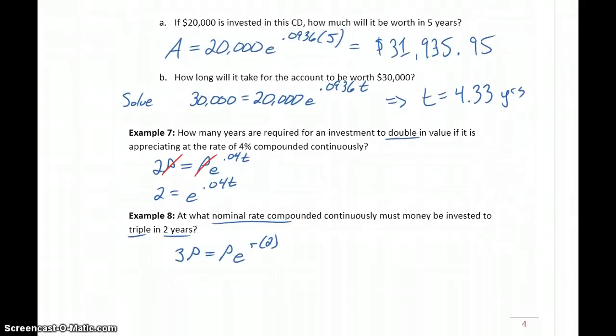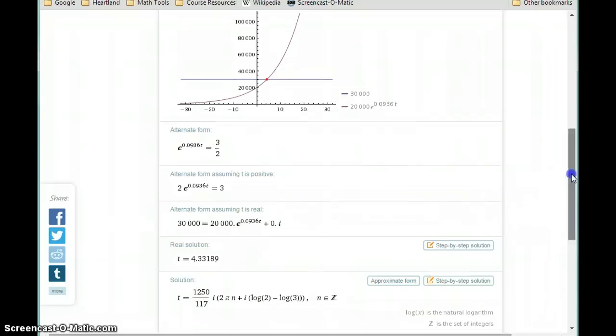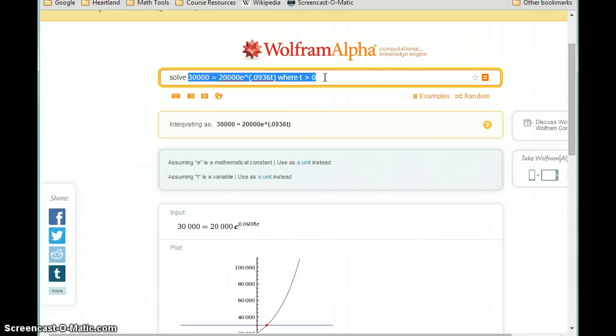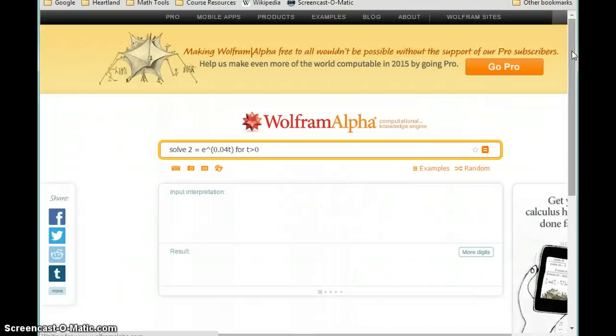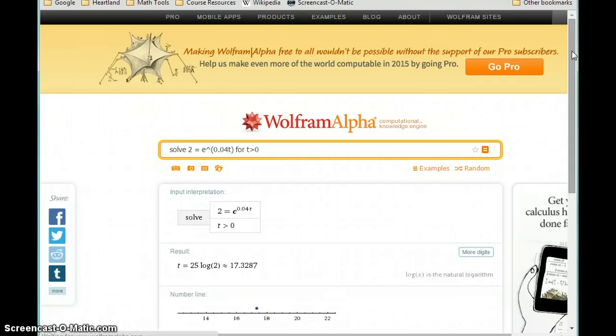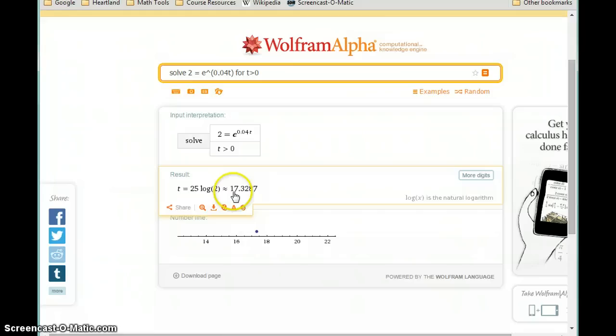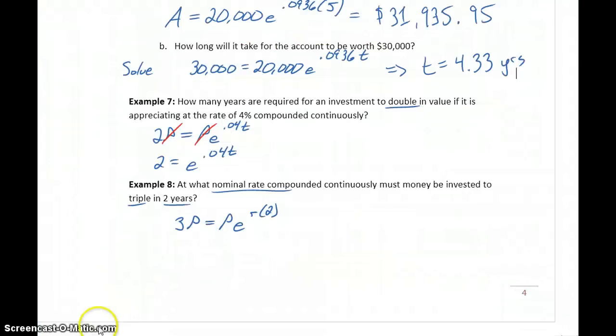So in example 7 and 8, we'll do something similar. For example 7, we can either start with the original expression or we can start with that simplified expression where we cancel the p's. So we're going to solve this equation with, again, this domain restriction that t needs to be greater than 0, since we're not going to consider negative time. And in this case, we get a result of 17.33 if we were to round that to two decimal places. So the amount of time in this case would be 17.33 years.